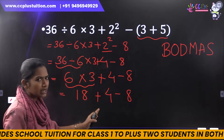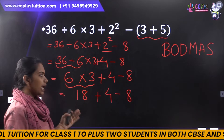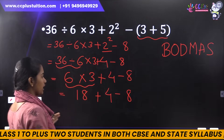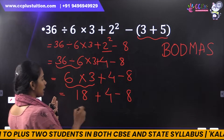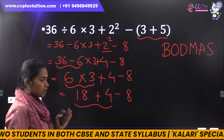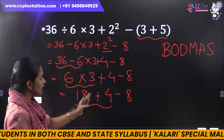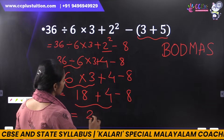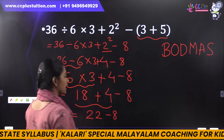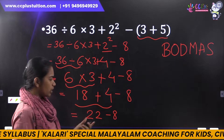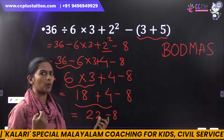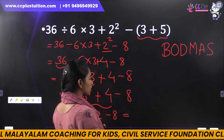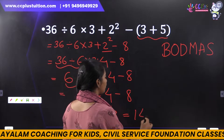Look — addition and subtraction. Addition comes before subtraction. 18 plus 4 is 22. So 22 minus 8. Now we have 22 minus 8. 22 minus 8 is 14. We have 14.